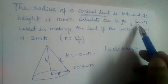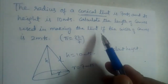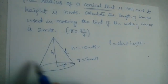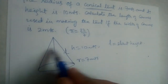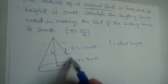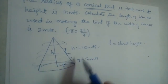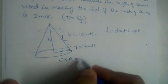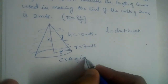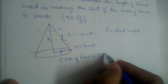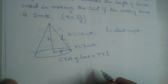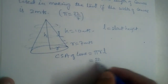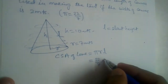We need to calculate the length of canvas used in making the tent — that means we need to find the curved surface area of this cone. The formula for curved surface area of a cone is pi × r × L. We take pi as 22 by 7 and the radius is 7.